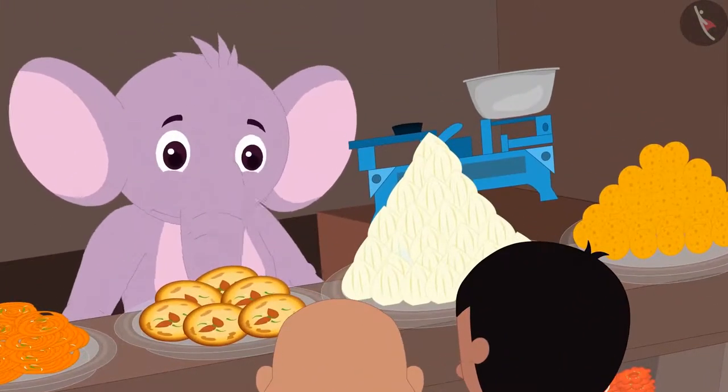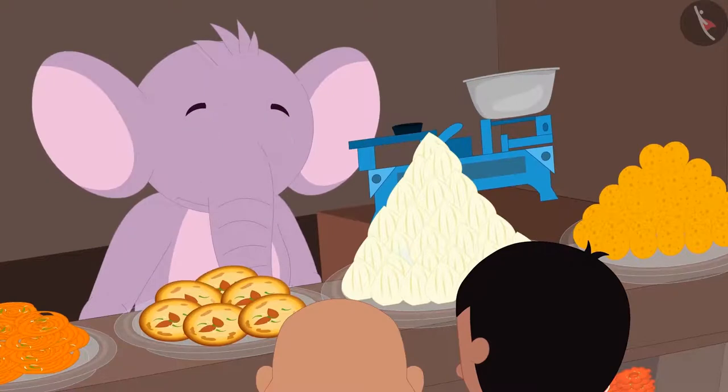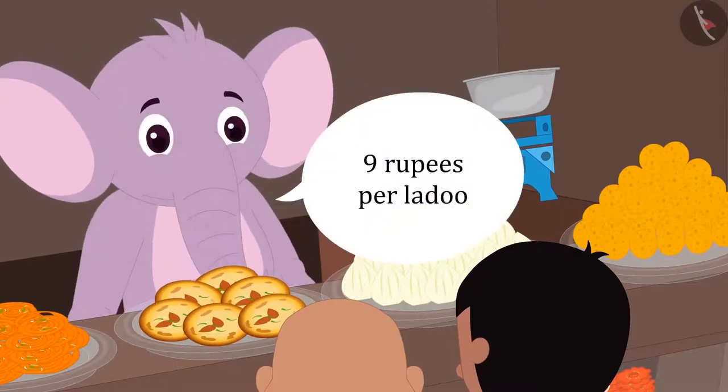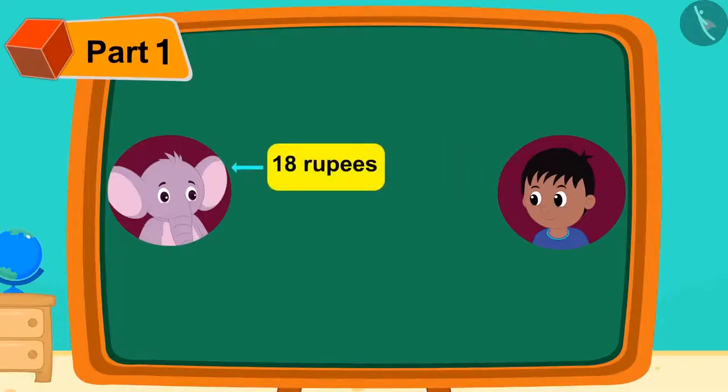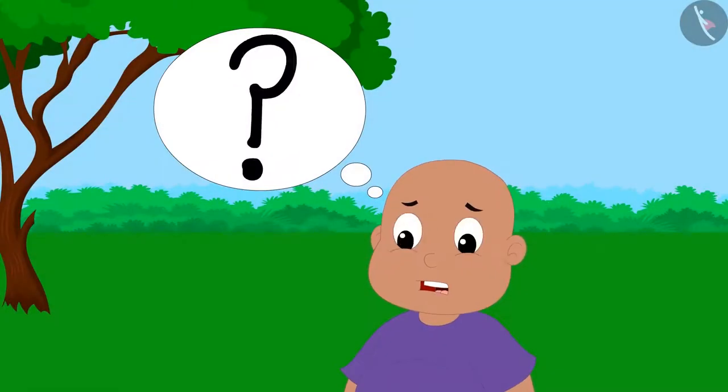Appu told Raju that the price of laddu is 9 rupees per laddu. Raju quickly gave 18 rupees to Appu and took 2 laddu. Bablu was shocked. How did Raju do this multiplication so quickly?